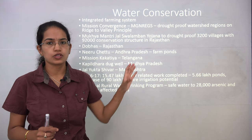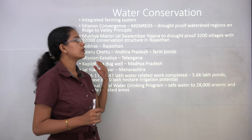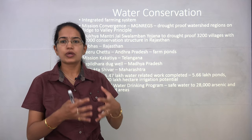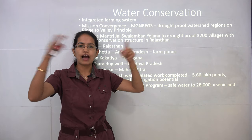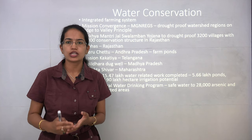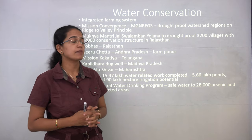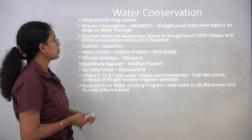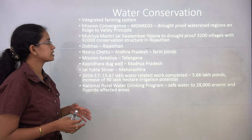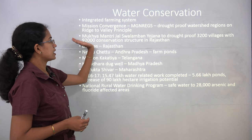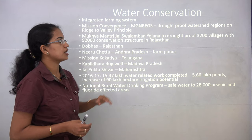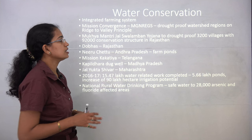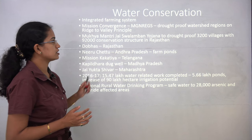The first individual aspect we'll discuss is water conservation. Rainwater can be harvested by means of tanks or rooftop harvesting systems. Farm ponds have also been established. Under MGNREGA, mission convergence talks about watershed regions and the ridge-to-valley principle. The Mukhyamantri Jal Swavlamban Yojana provides water to drought-prone areas covering 3,200 villages and 92,000 conservation structures in Rajasthan.